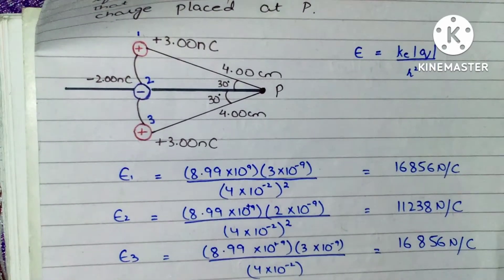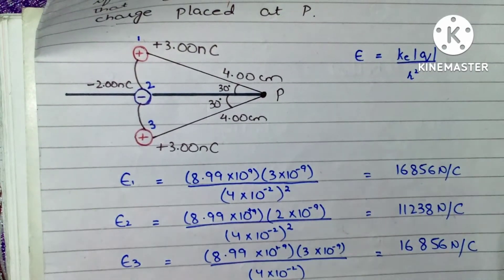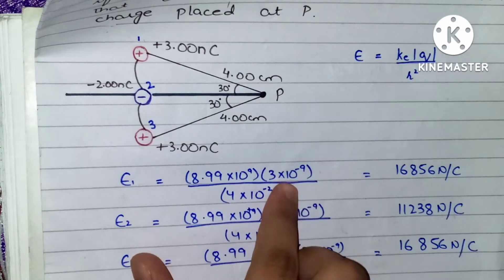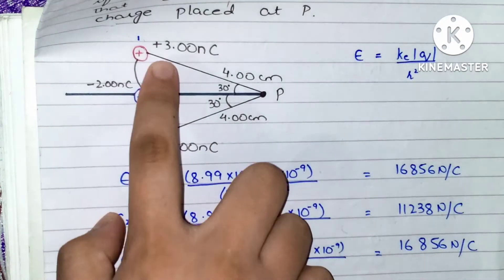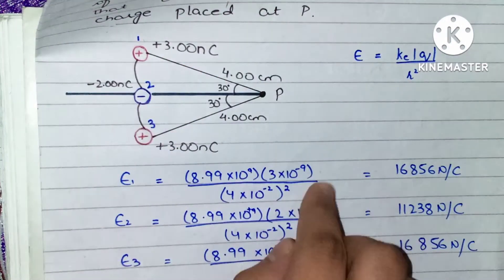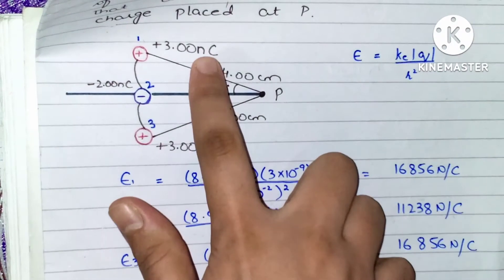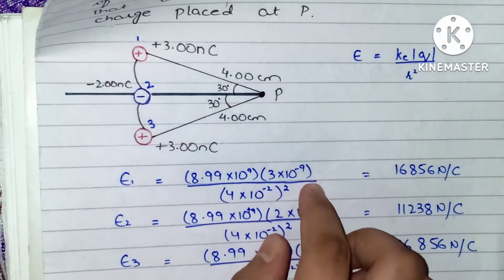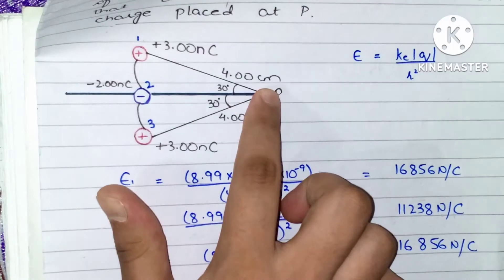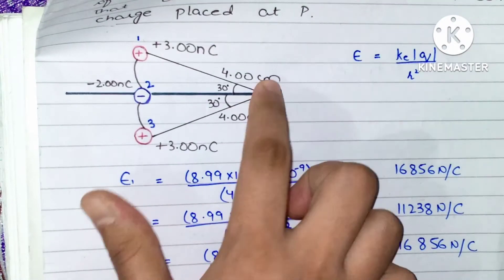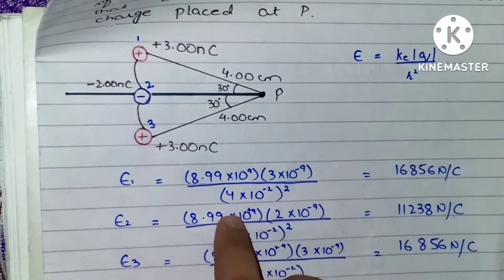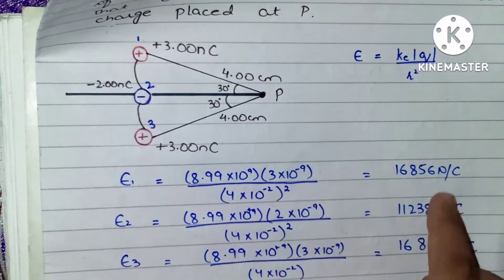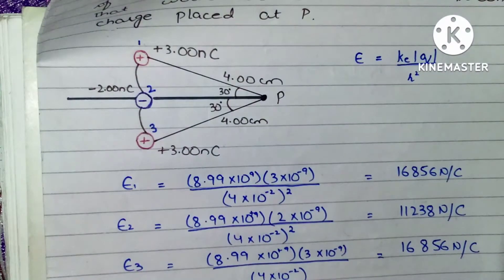For field 1 we have 8.9×10⁹ for ke, charge q is 3 nanocoulombs — converting nano gives 10⁻⁹ — and the distance in centimeters is converted to meters as 4×10⁻² meters. We have calculated all three field magnitudes in this way.